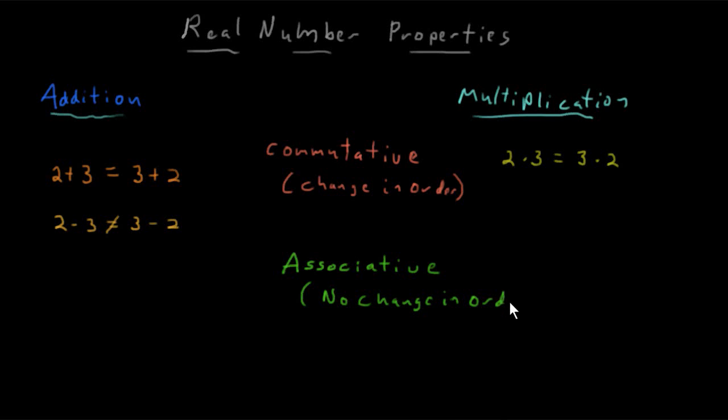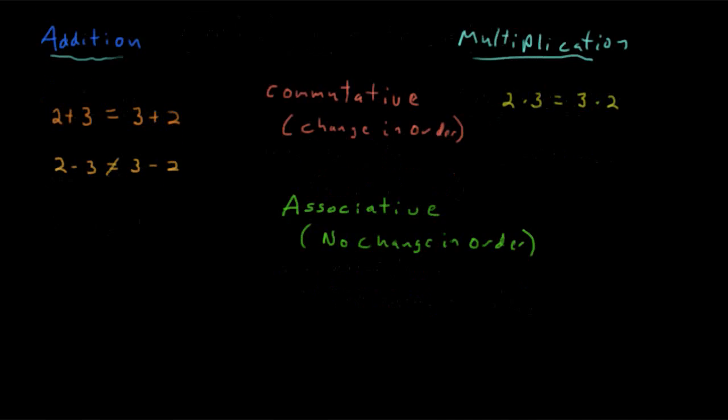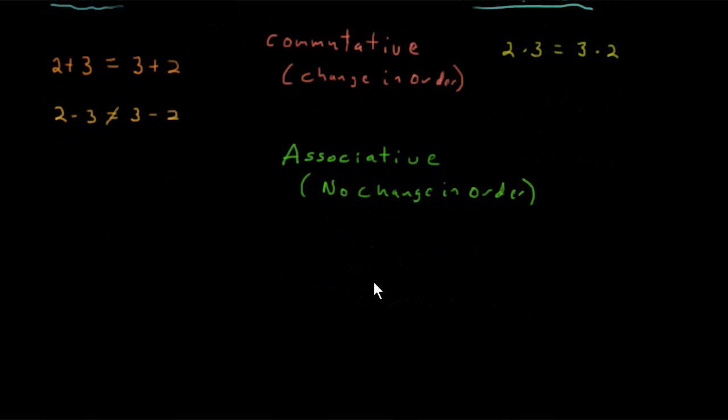The next property we're going to look at is the associative property. And there is no change in order with the associative property. Let's take three numbers and let's add them together. Once again, we're keeping it very simple. 2 plus 3 plus 4.